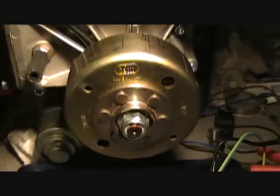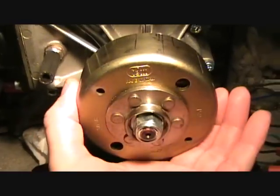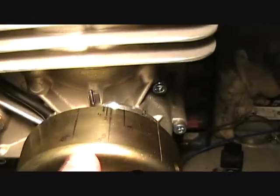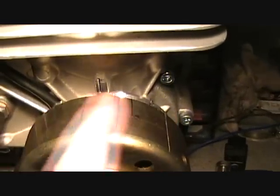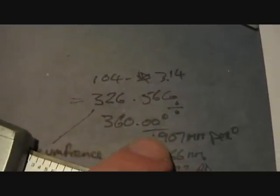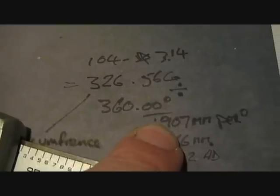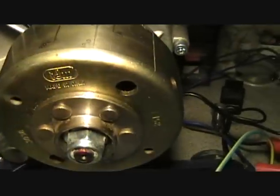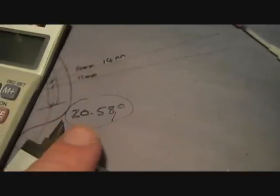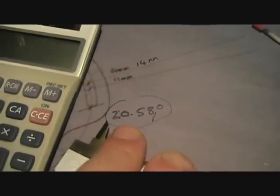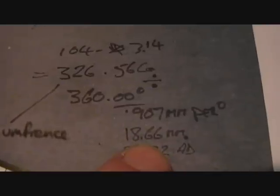The next thing I did was measure the diameter of the flywheel so we could place the timing marks. It came in at just under 104 millimeters. Using the same calculations as before, I've now worked out that it's 0.907 millimeters per degree on the flywheel. So our initial setting of 20.58 degrees—we can now work out that we need to place a mark 18.66 millimeters from top dead center.